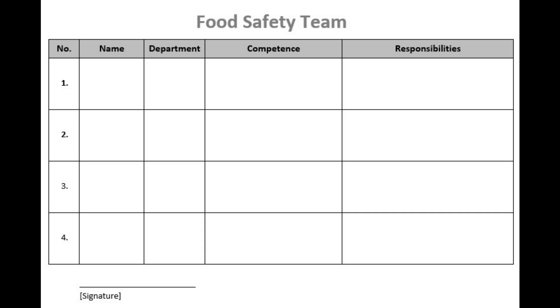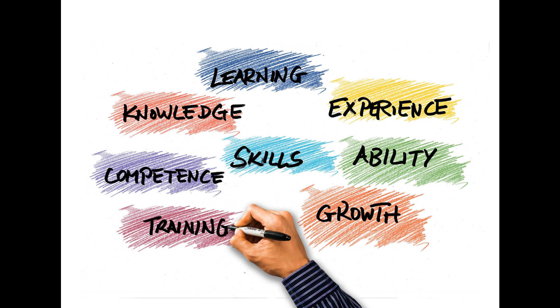Who should be the members of the HACCP team? Members appointed to the HACCP team shall have specific knowledge of HACCP, the product, and the process of their industry. The organization should maintain competency records of the food safety team members. The HACCP team shall also have a team leader, also called the HACCP team leader or food safety team leader.